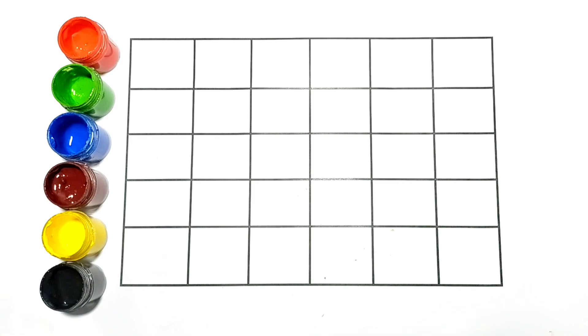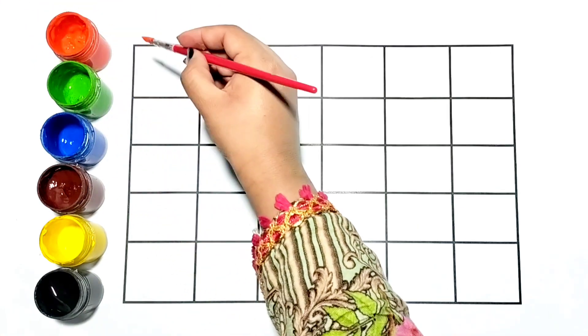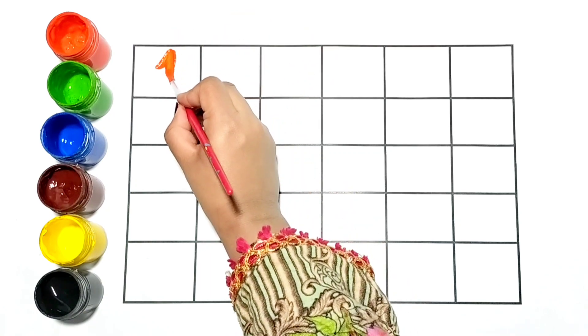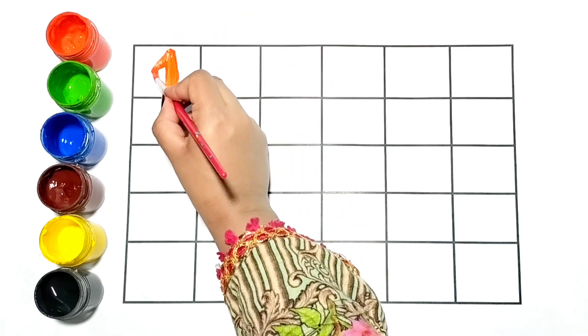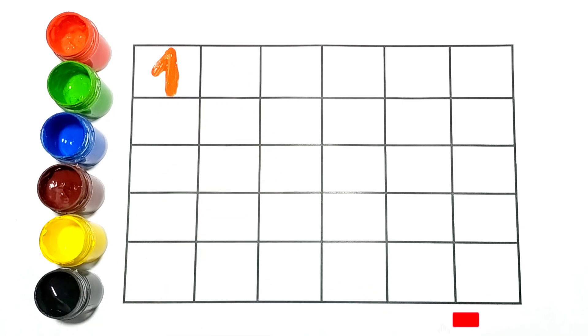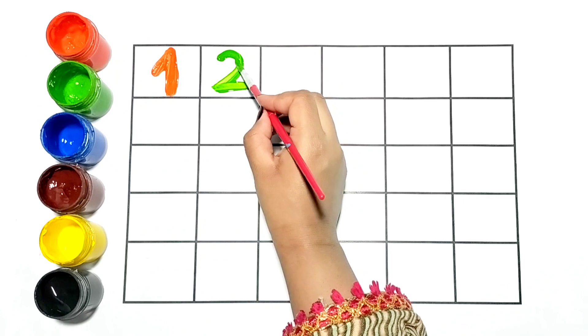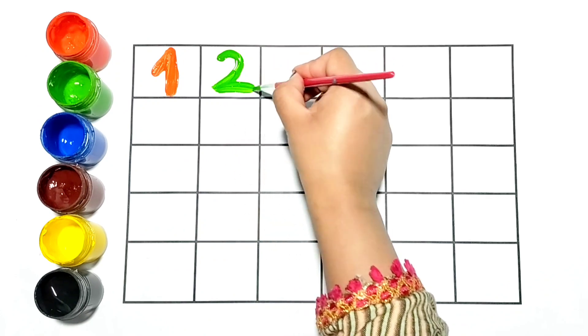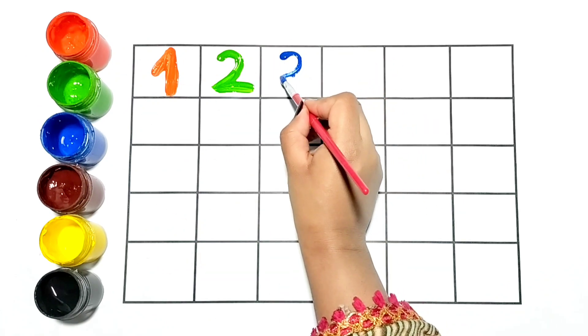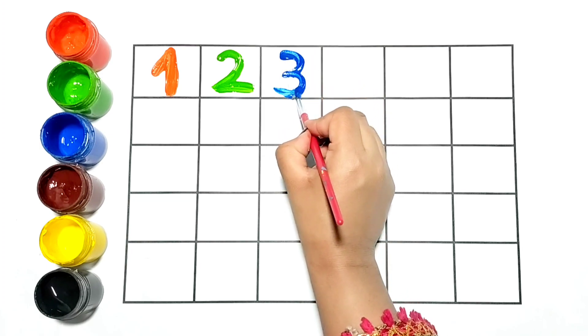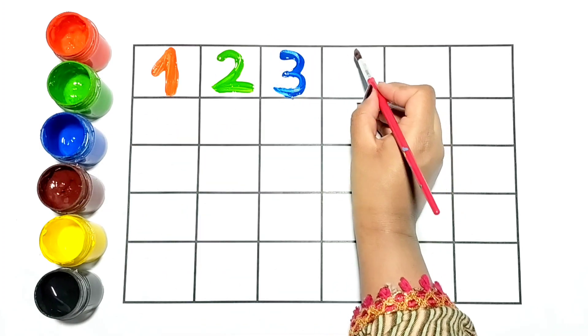Let's start writing in boxes with lovely colors. Let's write one. I am writing one with orange color. Let's write two. I am writing it with green color. Now I am writing three with blue. This is number 4.